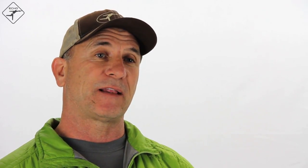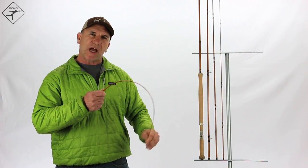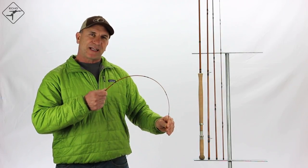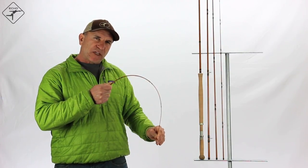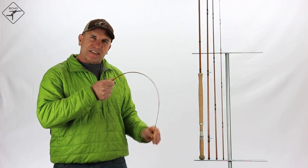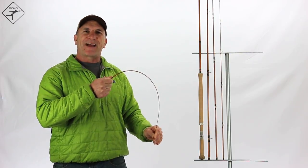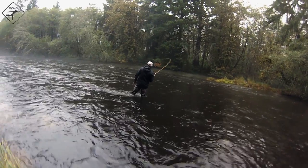A side benefit to glass is the ability to put maximum pressure on a fish and not break the tippet or pull the hook. Glass fibers stretch much more than their graphite counterparts, so when a rod is fully loaded and you're fighting a fish and it shakes its head or gets stuck in the current, glass fibers continue to absorb energy and keep you in the game.